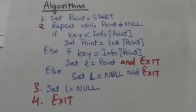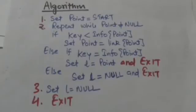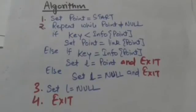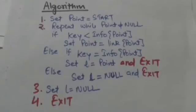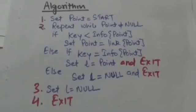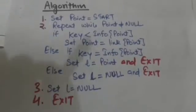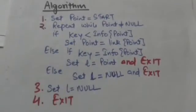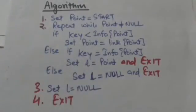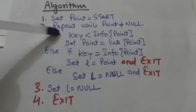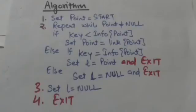In the first step of the algorithm, the value of list pointer variable start is assigned to the pointer variable point. Then, while point is not equal to null, the following steps will be repeated.